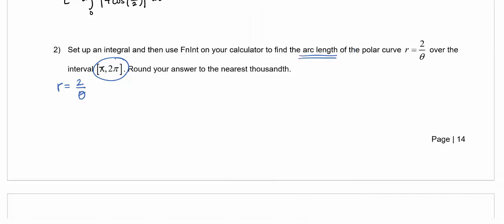So R is 2 over theta. So I'll also want to find dr d theta. And so if R is 2 over theta, then dr d theta is negative 2 over theta squared. And so I will use this for my arc length formula. So I'm going from pi to 2 pi. So I'm going to do the anti-derivative from pi to 2 pi of the square root of R squared, so 2 over theta quantity squared, plus my dr d theta squared, all under that square root, with respect to theta. And literally this is a setup.